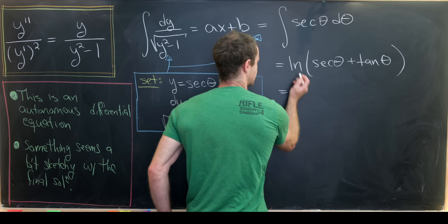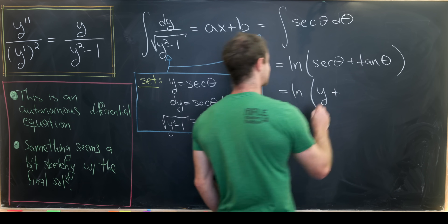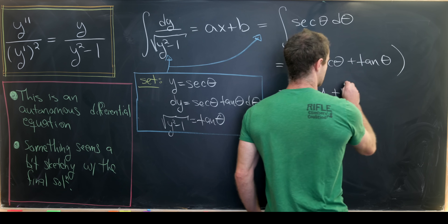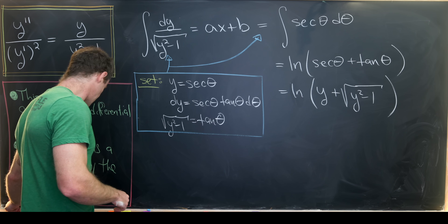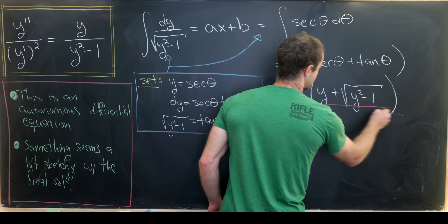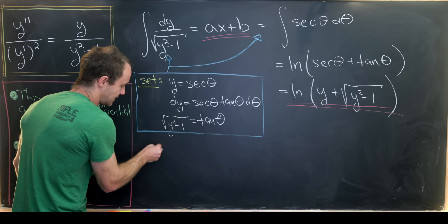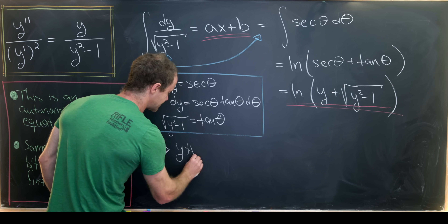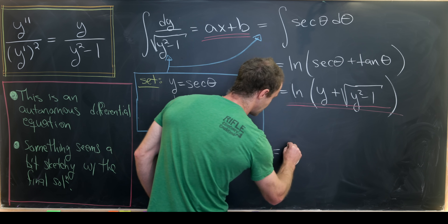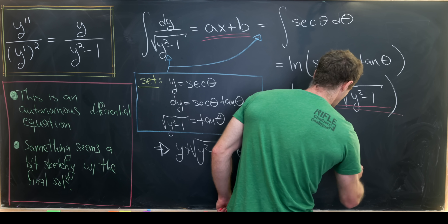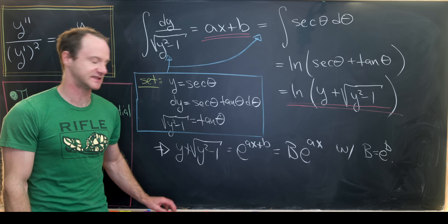The integral of secant theta has a standard antiderivative of the natural log of secant theta plus tangent theta. Putting that back in terms of y: secant theta was y and tangent theta was the square root of y squared minus 1. So we have the natural log of y plus the square root of y squared minus 1 equals ax plus b. That tells us y plus the square root of y squared minus 1 equals e to the ax plus b, which I can rewrite as capital B times e to the ax, where B equals e to the b.